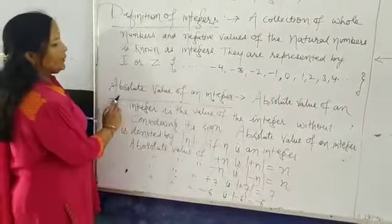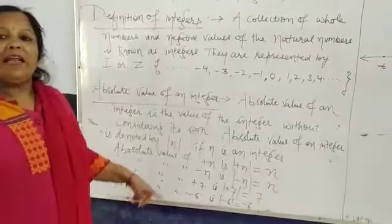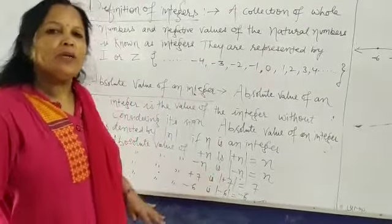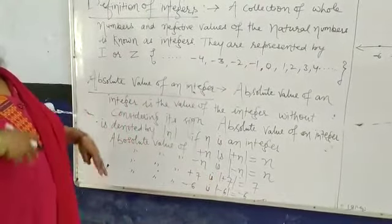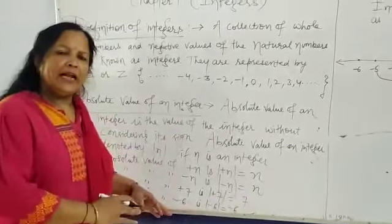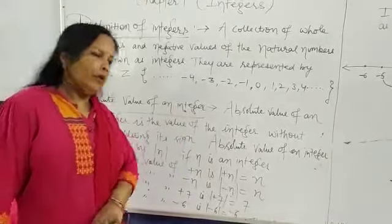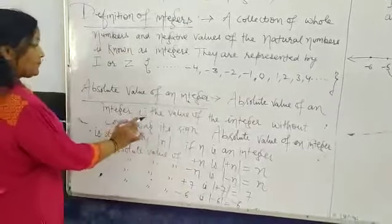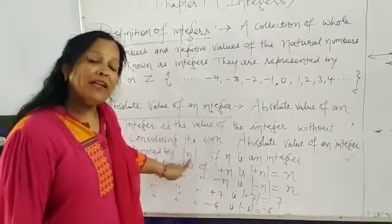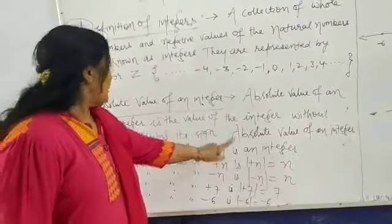Now comes the absolute value of an integer. The absolute value of an integer is the value of the integer without considering its sign — whether it is positive or negative. If it is positive, it remains positive. The absolute value of a negative integer is positive. It is denoted by placing the integer n between two vertical bars. Here, n is an integer.